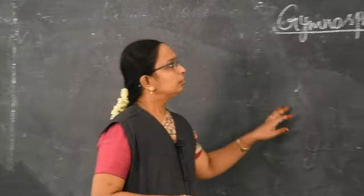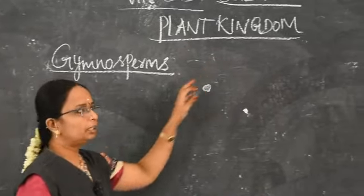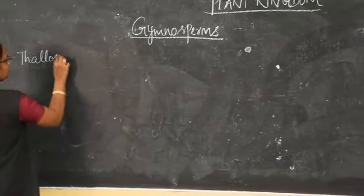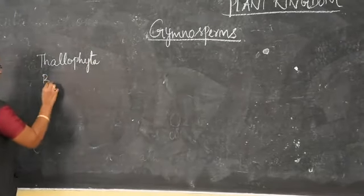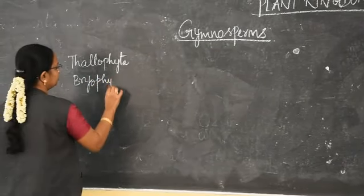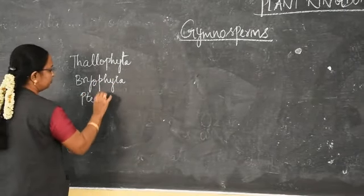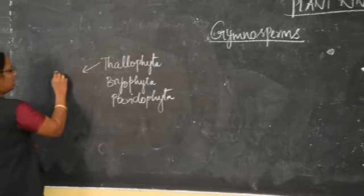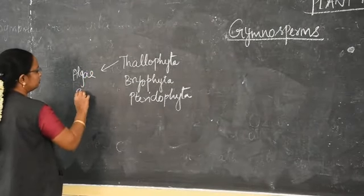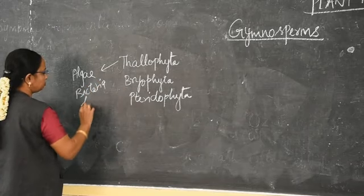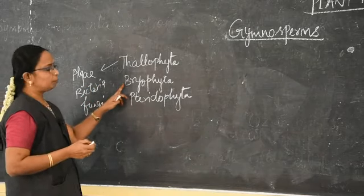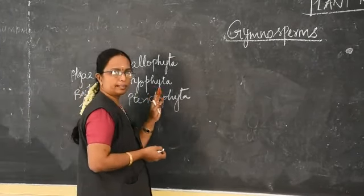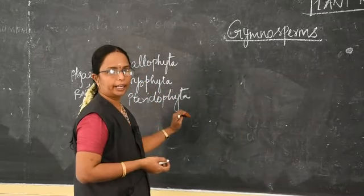Good morning. We are dealing with the lesson Plant Kingdom. Under this, what we have learned about Thallophyta, Bryophyta, and Pteridophyta. Under Thallophyta, what we have seen about algae, bacteria, and fungi. And then about Bryophyta and Pteridophyta. In these topics, what we have learned about their structure, classification, and economic importance.